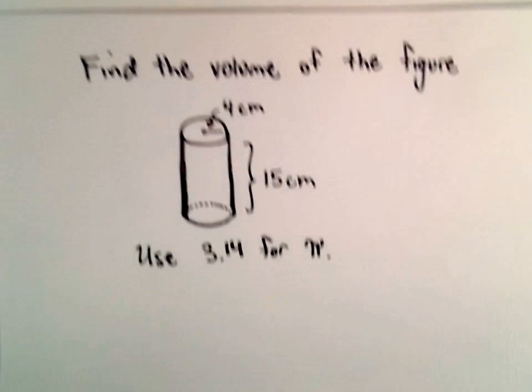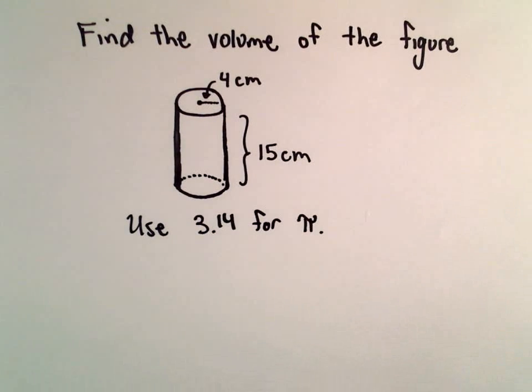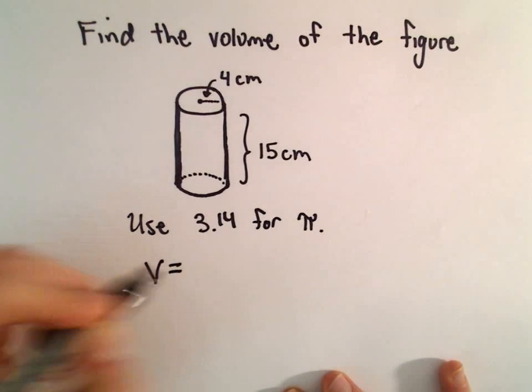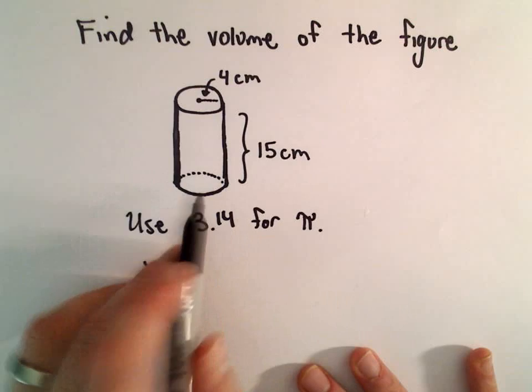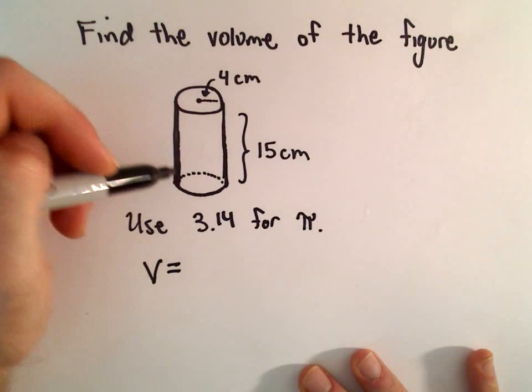Okay, here we're going to find the volume of a cylinder. So to figure out the volume, what I'm going to do is find the area of one of the bases, and then simply multiply it by the height.